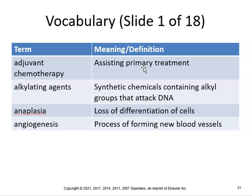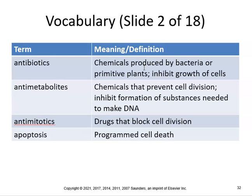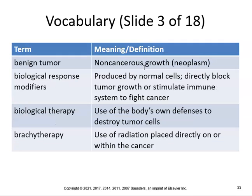Key vocabulary: adjuvant chemotherapy assists primary treatment. Alkylating agents are synthetic chemicals containing alcohol groups that attack DNA. Anaplasia is loss of differentiation of cells. Angiogenesis is the process of forming new blood vessels — know that one. Antibiotics are chemicals produced by bacteria or primitive plants that inhibit cell growth. Antimetabolites are chemicals that prevent cell division by inhibiting formation of substances needed to make DNA. Antimitotics are drugs that block cell division. Apoptosis is programmed cell death.